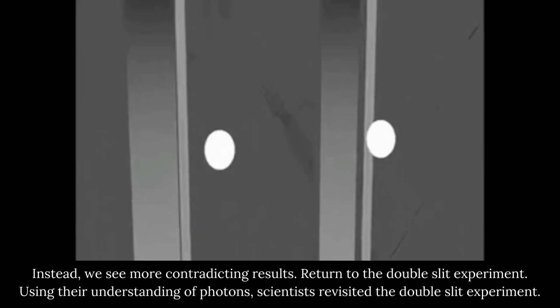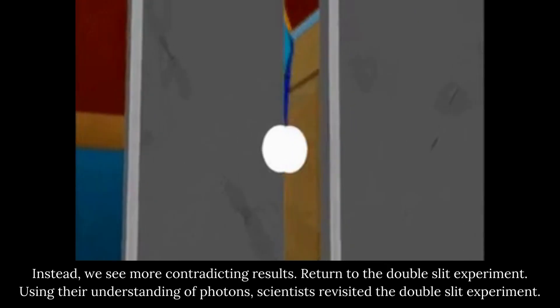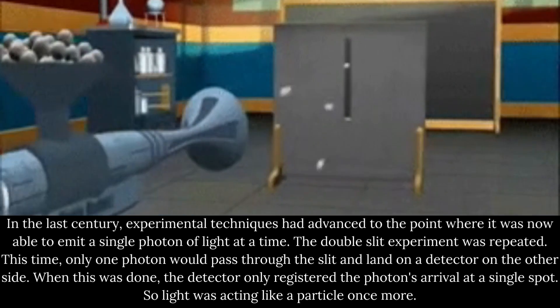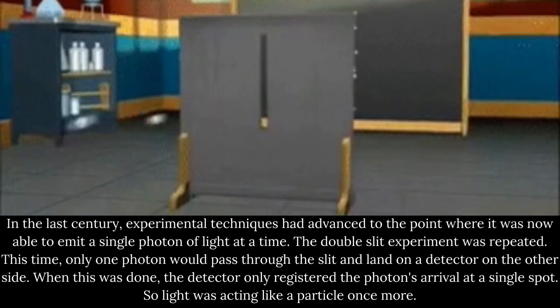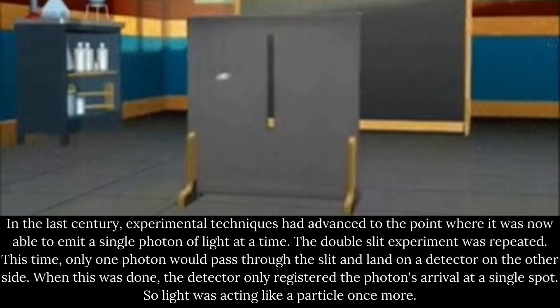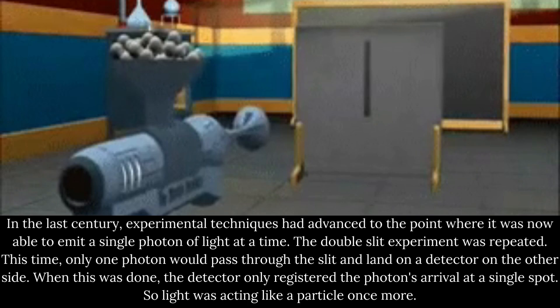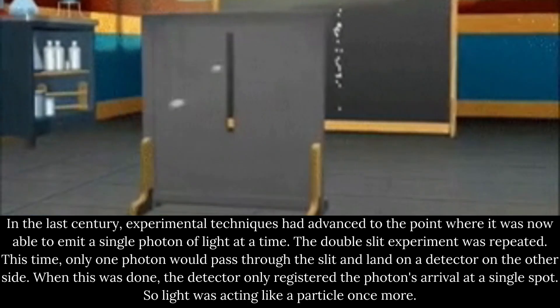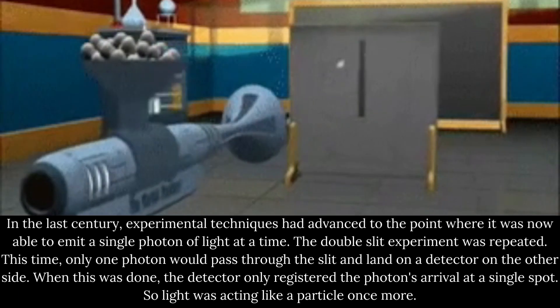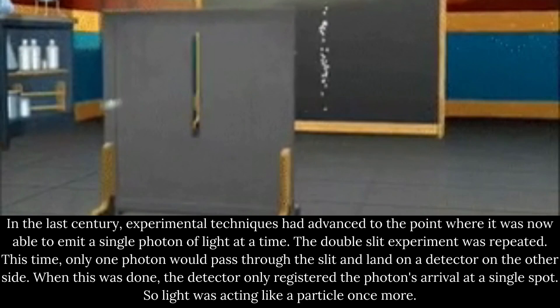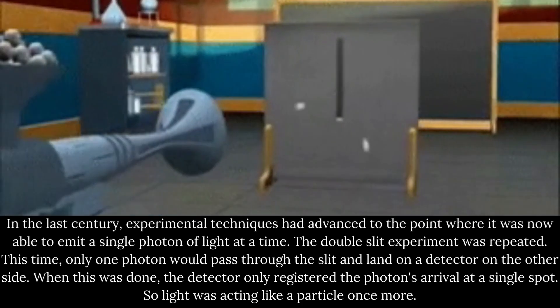Using their understanding of photons, scientists revisited the double-slit experiment. In the last century, experimental techniques had advanced to the point where it was now able to emit a single photon of light at a time. The double-slit experiment was repeated. This time, only one photon would pass through the slit and land on a detector on the other side. When this was done, the detector only registered the photon's arrival at a single spot.